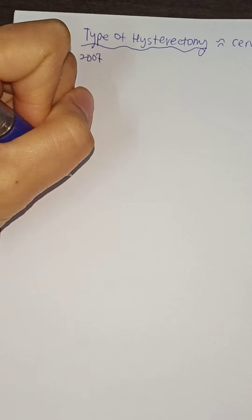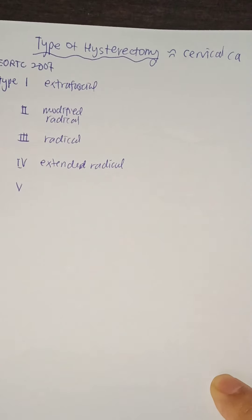There are five types in total: Type 1, Type 2, Type 3, Type 4, and Type 5. The other names for these are Extrafascial, Modified Radical, Radical, Extended Radical, and Pelvic Exenteration.